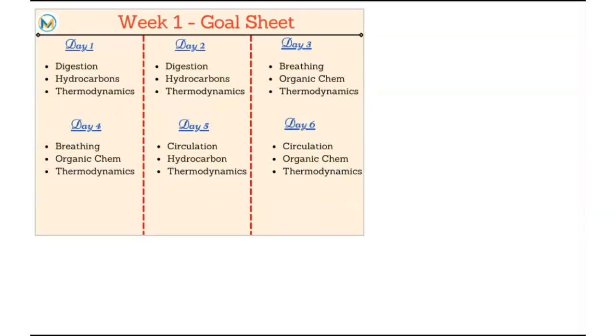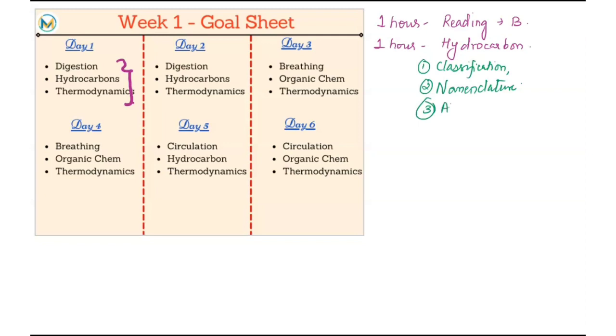So what are we going to do on a weekly basis? I put down the list of chapters allotted for every day. For the first day we have these three chapters: digestion, hydrocarbons, and thermodynamics. Basic plan for all three days will remain the same. You're spending one hour reading the bio chapter, one hour reading the hydrocarbon chapter. Obviously it will not happen in one day, so we're dividing it into three sections. You're doing classification, nomenclature, and the alkane part on day one from hydrocarbon.